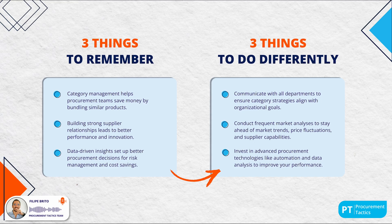And here are three things to do differently moving forward with category management. First, focus on stronger collaboration between procurement and other departments to ensure category strategies are aligned with business objectives and organizational goals. Second, conduct more frequent market analysis to stay ahead of market trends, price fluctuations and supplier capabilities, ensuring you can adapt your strategies as needed. Third, invest in advanced procurement technologies to automate routine tasks, enhance data analysis and improve the efficiency of tracking supplier performance and compliance.